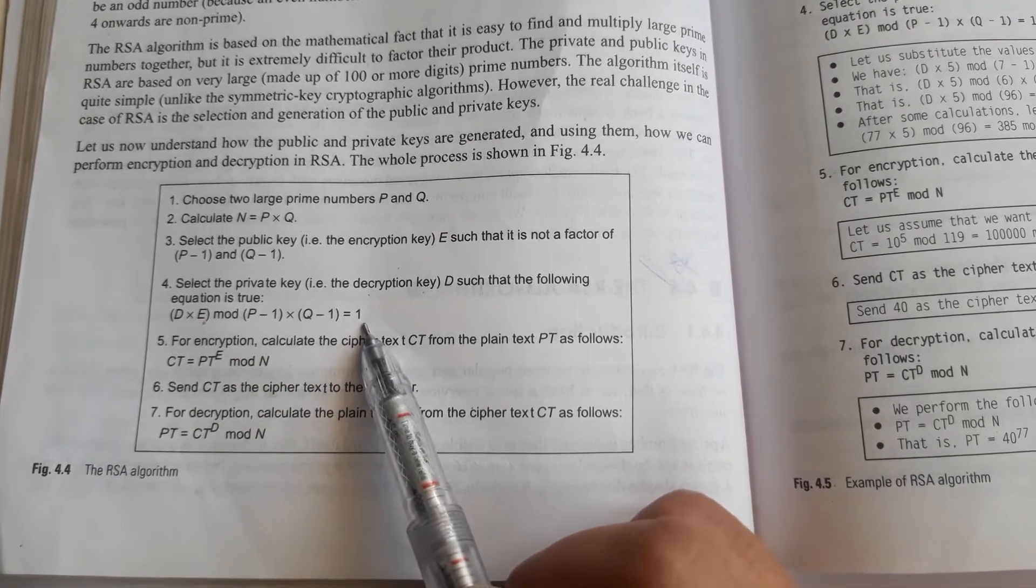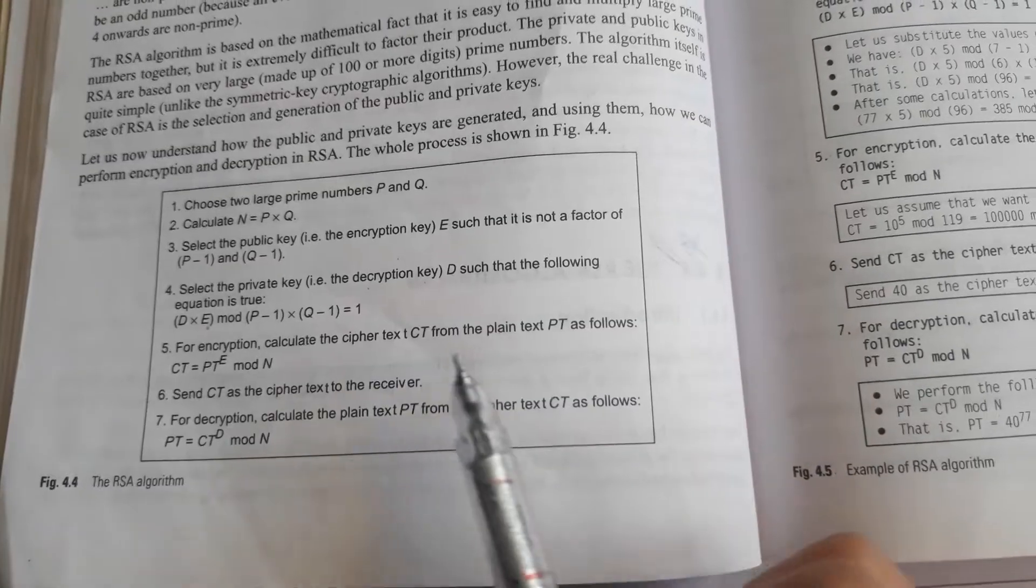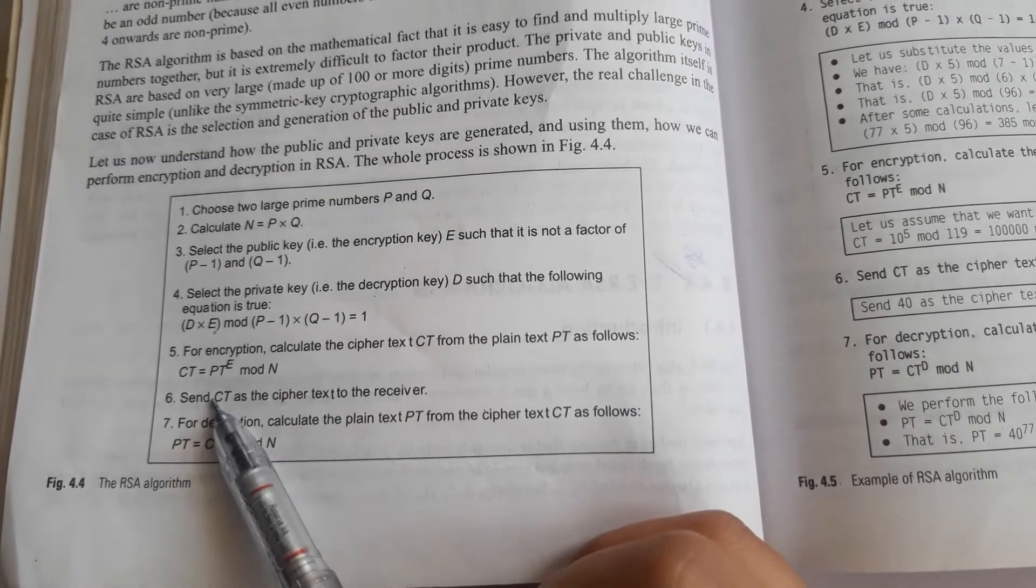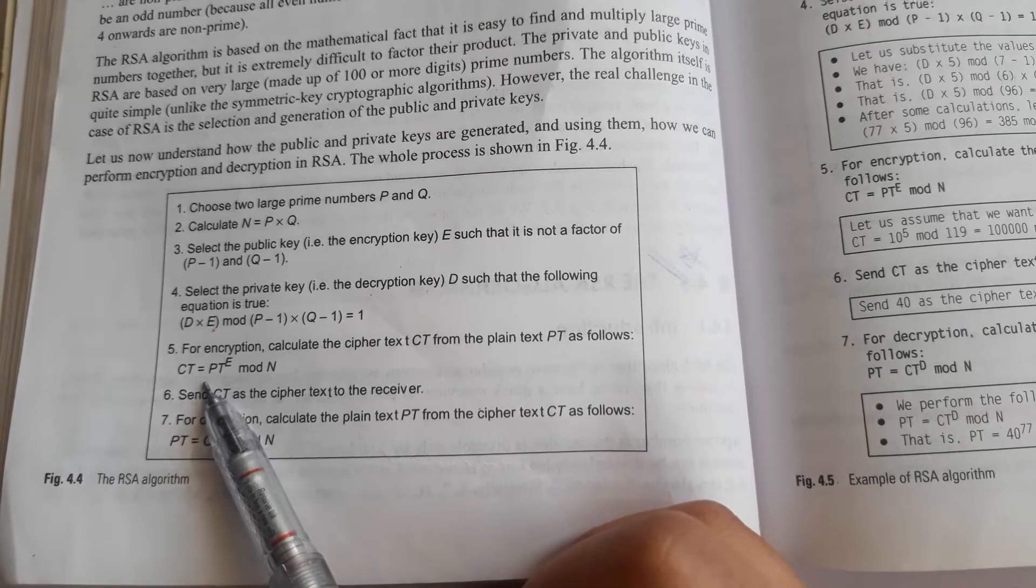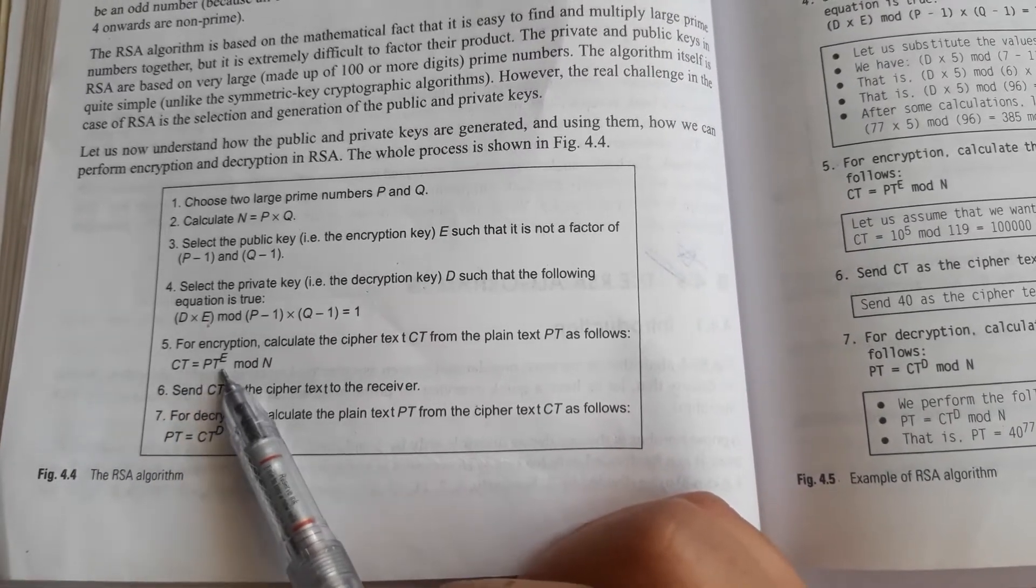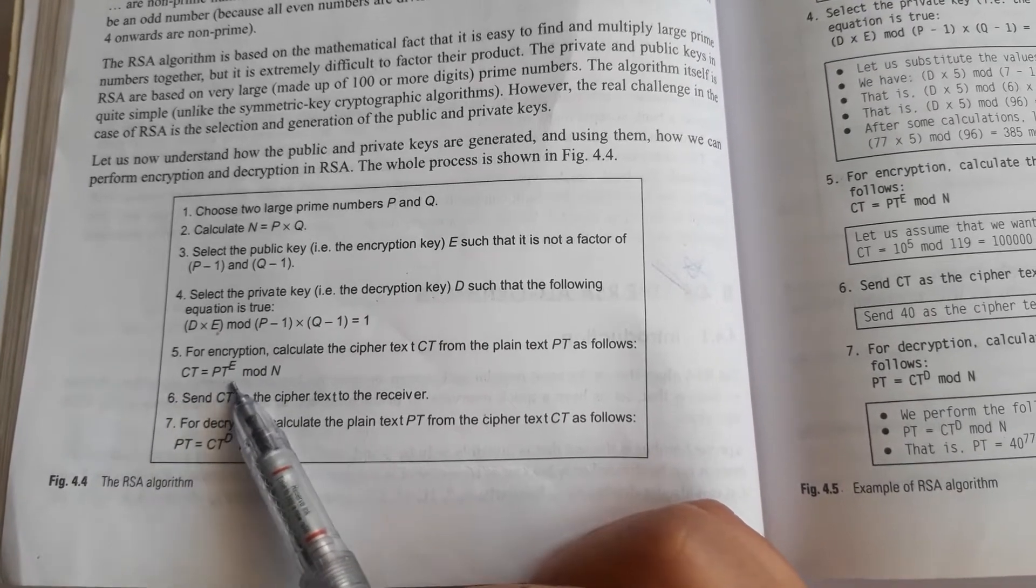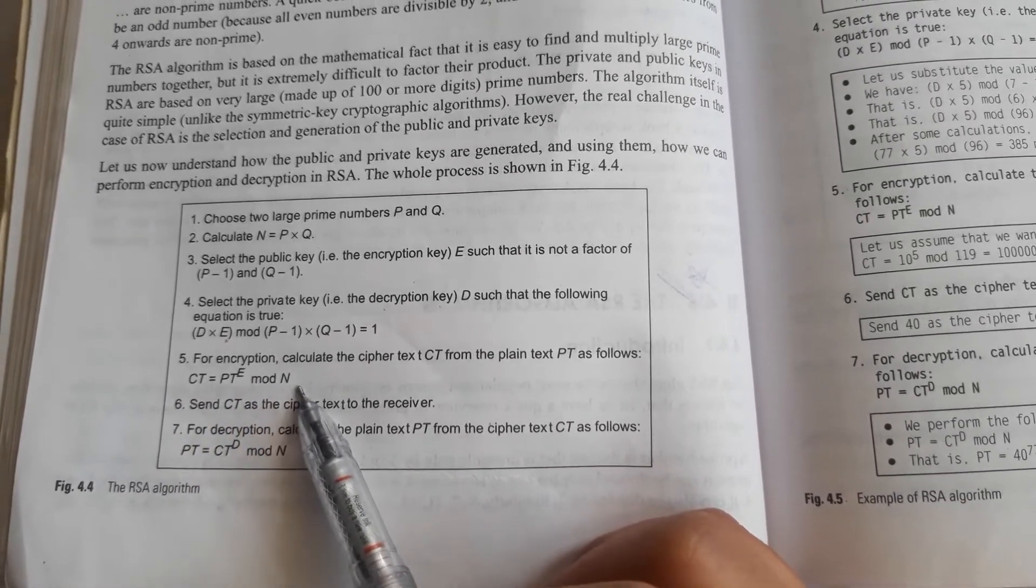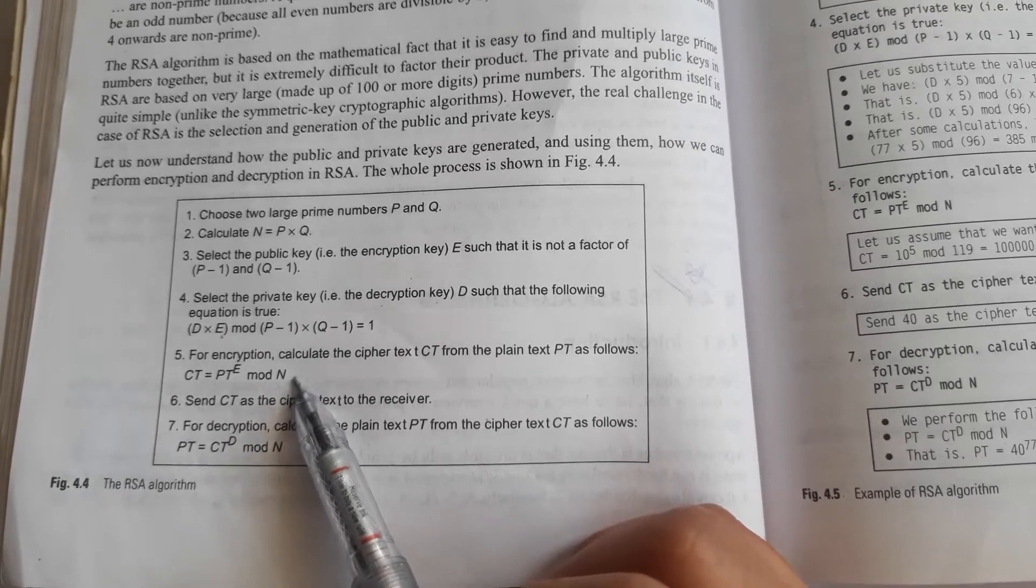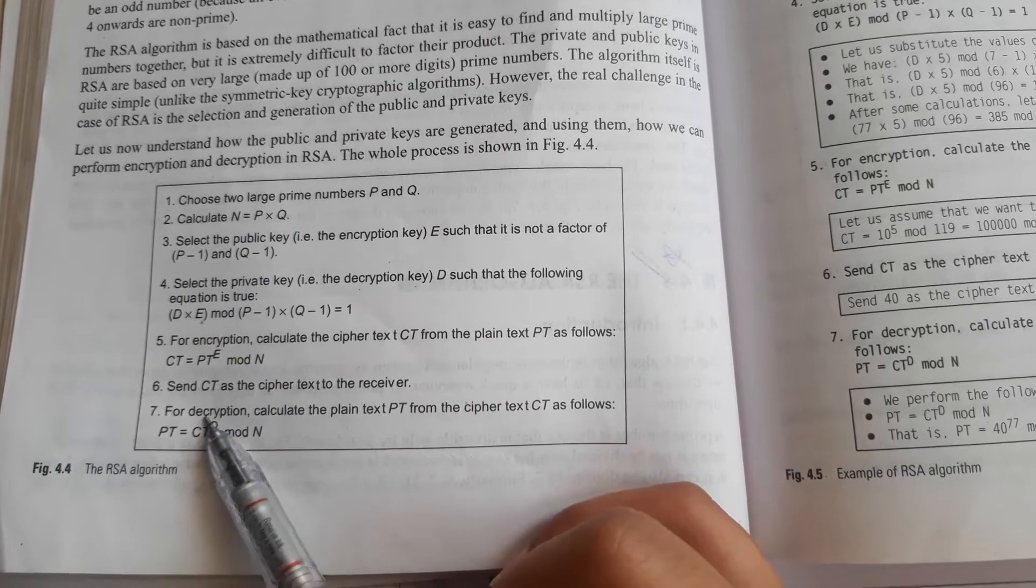For encryption, calculate the ciphertext from the plaintext using the following mathematical equation: CT = PT^E mod n, where E is encryption key, CT is ciphertext, PT is plaintext, and n is the value that we calculated in the second step. In the last step